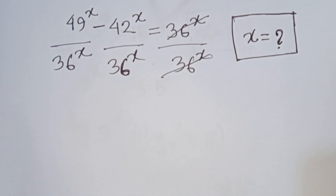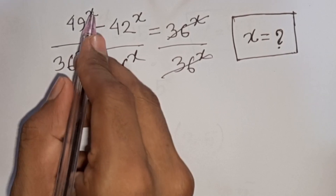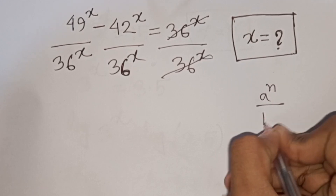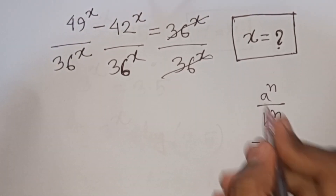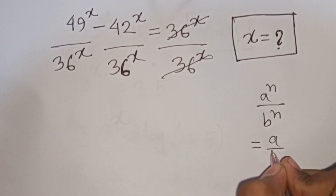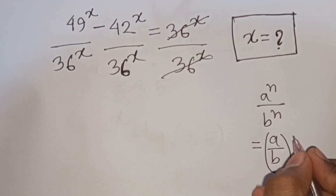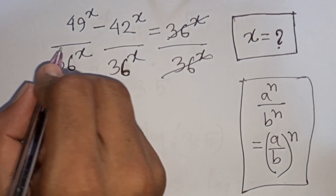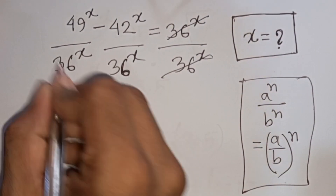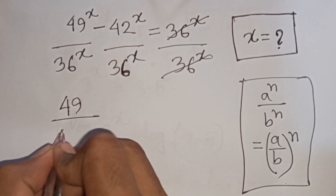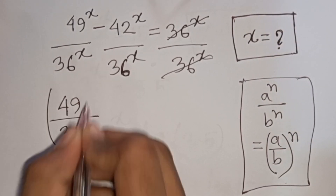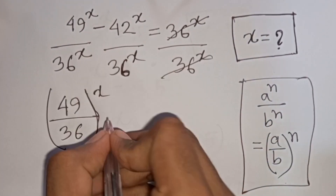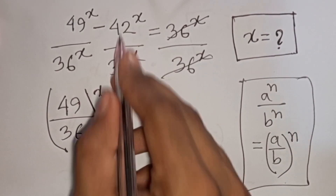Now from here, x has the same power but different bases. According to the exponential rule that a^n times b^n equals (a/b)^n, we can write here (49/36)^x minus, again same power but different base.